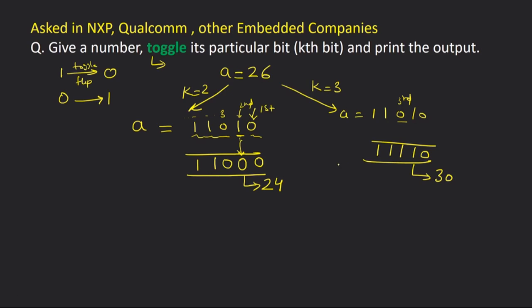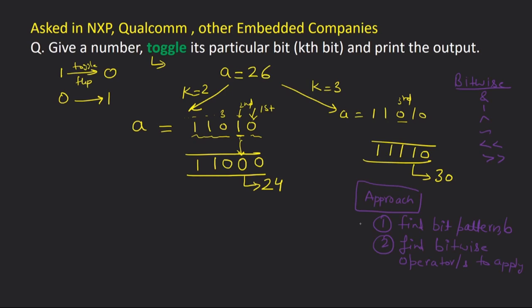Let's see how we should approach these types of questions. The approach is: we have to find some bit pattern, let's name it B, and then find a bitwise operator or group of operators to apply. B is the bit pattern to be applied with A, and we need to find what operation to apply on A and B to get the desired output. The available bitwise operators are: AND, OR, XOR, bitwise complement, left shift, and right shift.